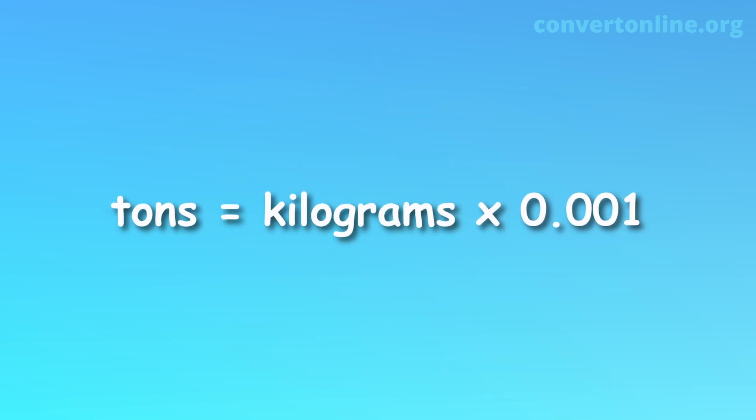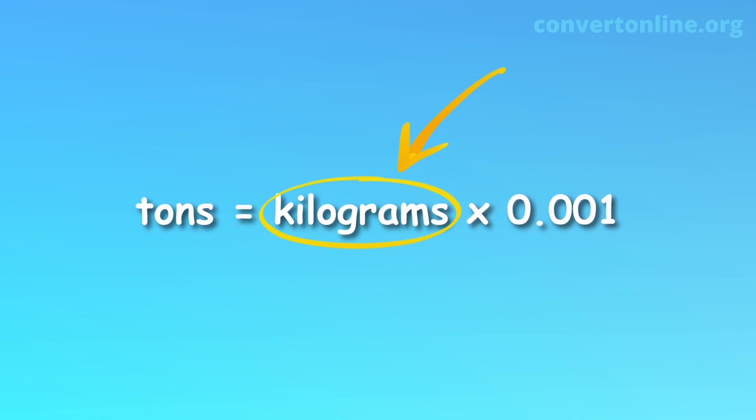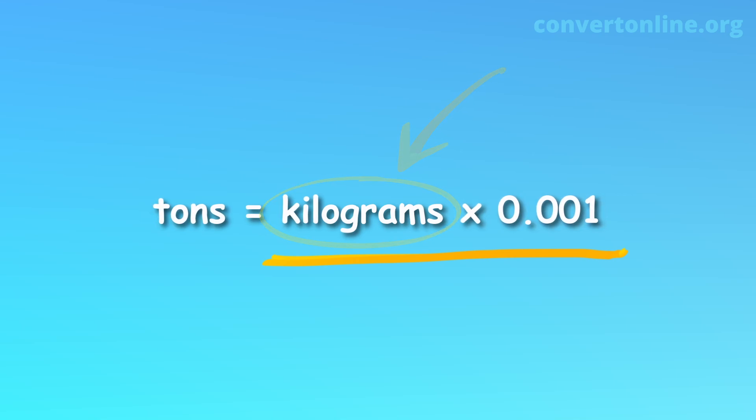The formula for the conversion is number of tons is equal to number of kilograms times 0.001. Substitute given number of kilograms in this formula and solve the right-hand side value to get the weight in tons.